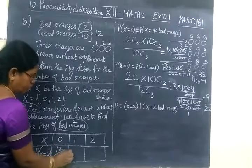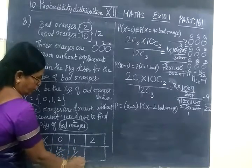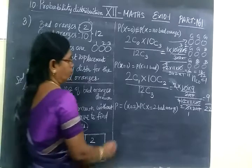Now you take the right answer. 12 by 22, then 9 by 22. Then come to the next one.